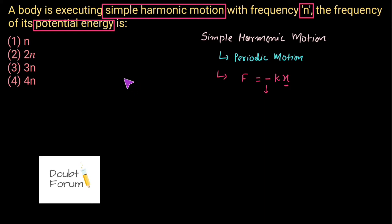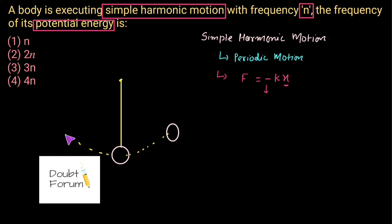We will understand simple harmonic motion with the help of a simple pendulum. There is a string with a bob of certain mass tied to one end, and the other end is fixed. The bob can move in both directions between two extreme positions. This is the mean position, one extreme side, and the other extreme side. In this question we are asked to find the frequency of the potential energy of a simple harmonic motion.